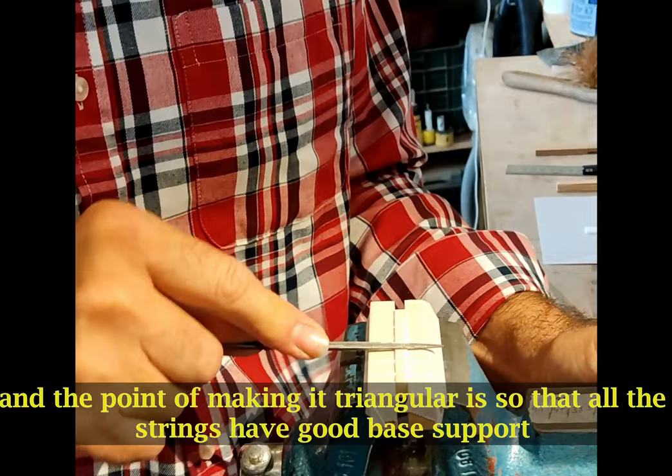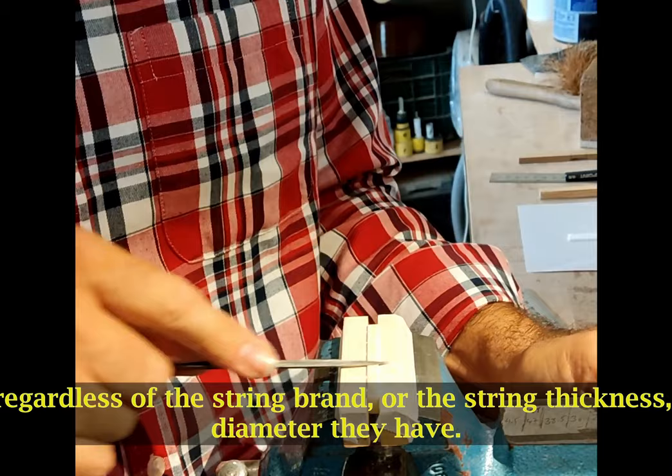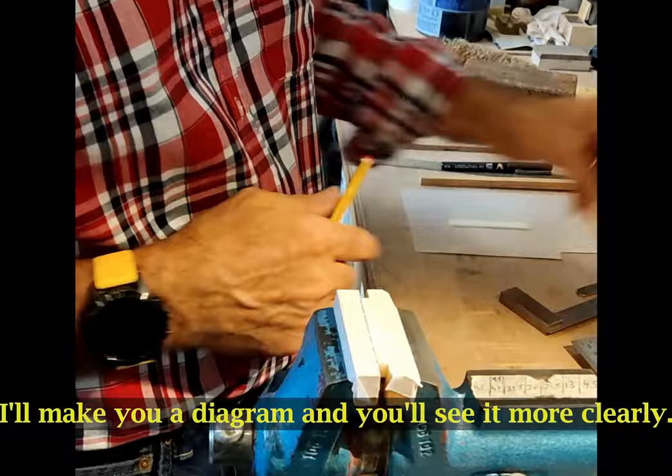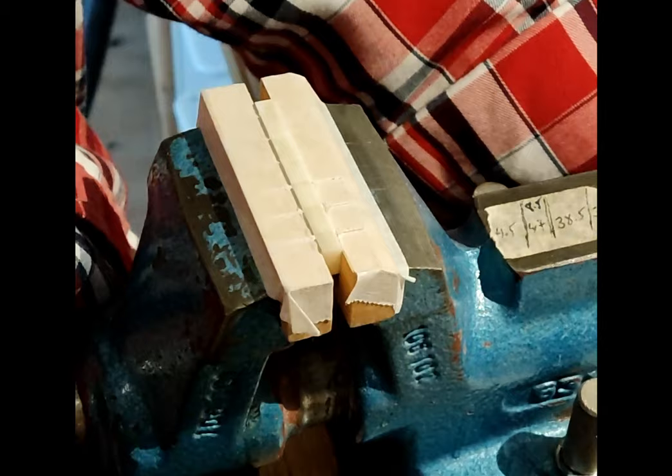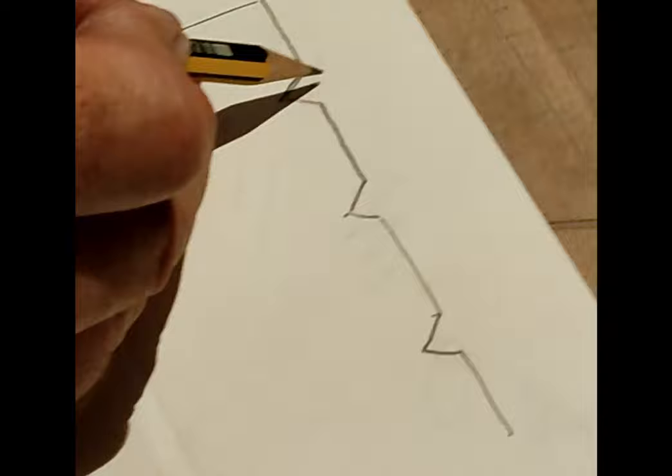And the issue of doing it triangular is so that all the cords have good support, independently of the size, the diameter. I'm going to do a diagram and you're going to see it. So what we're doing at the moment is to get the right profile for the strings to rest on the nut. We're doing a V shape.